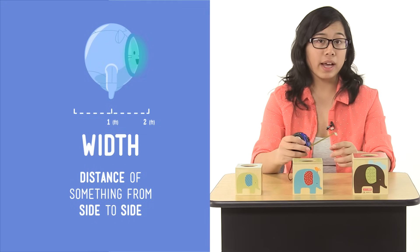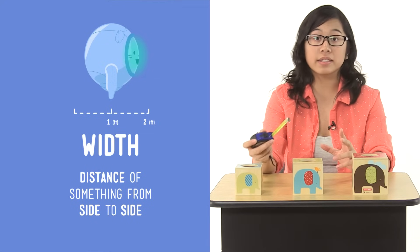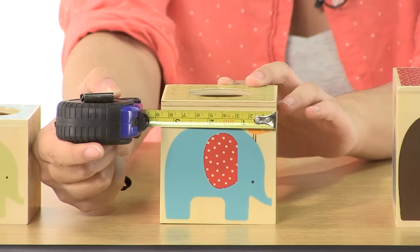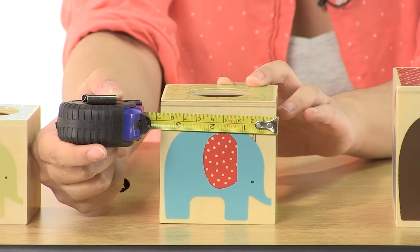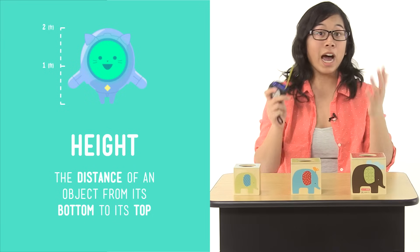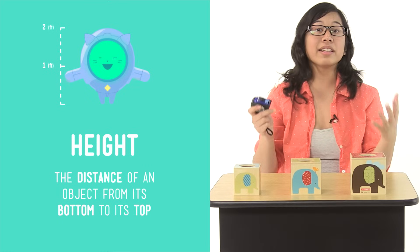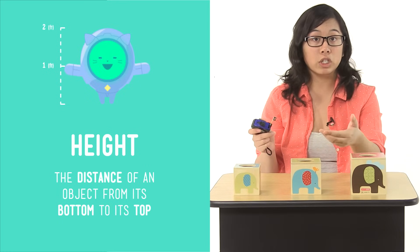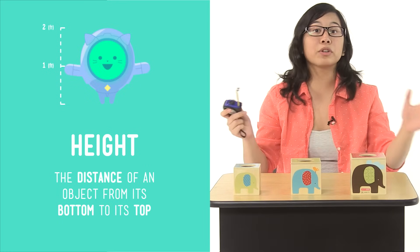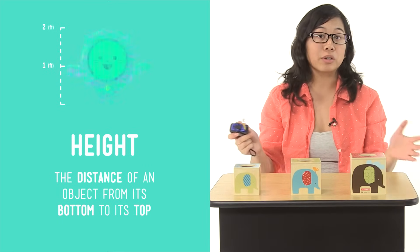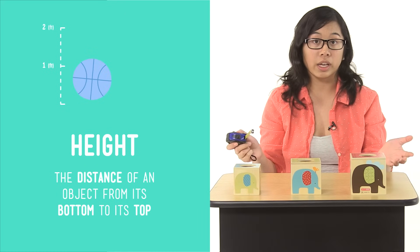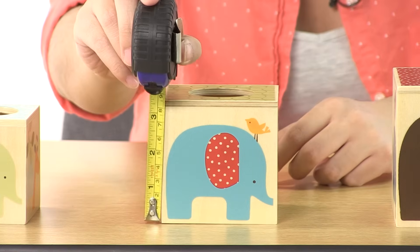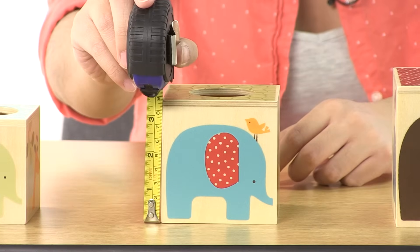Width, meanwhile, is the distance of something from side to side, and its width is eight and a half centimeters. Height — that's an easy one. It's the distance of an object from its bottom to its top, not to mention a major factor in being able to play basketball successfully. And the height of this block is nine centimeters.